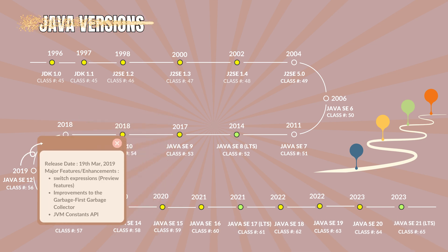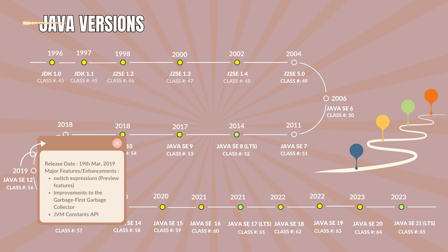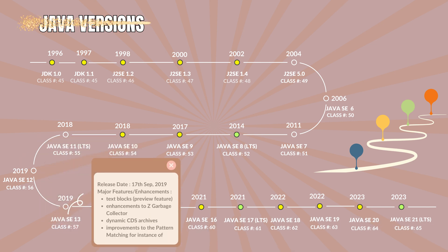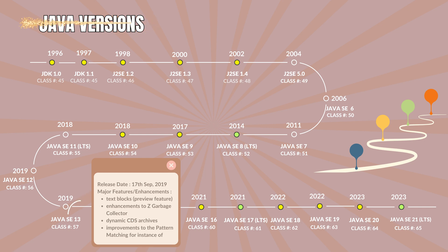Java 12.0 with the class file version 56. It was released on 19th March 2019. The major features and enhancements are the introduction of switch expressions as a preview feature, improvements to the Garbage-First garbage collector, and the JVM Constants API. Java 13.0 with the class file version 57 was released on 17th September 2019. Features include text blocks as a preview feature, enhancements to the Z Garbage Collector ZGC, dynamic CDS archives, and improvements to pattern matching for instanceof.